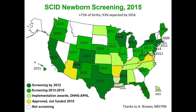To show which states are doing newborn screening for SCID: this started in 2008 in Wisconsin. Louisiana had a pilot, then Massachusetts, and California was one of the earliest adopters in 2010. This has been spreading very rapidly to other states, so that now over three-quarters of babies in the country are being screened with this TREC biomarker. We anticipate that almost all babies will be screened by the end of 2016.